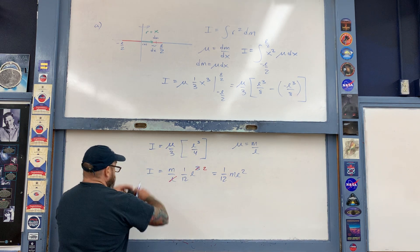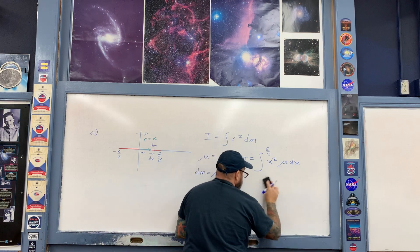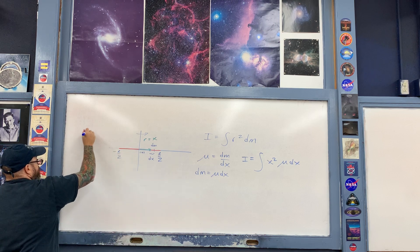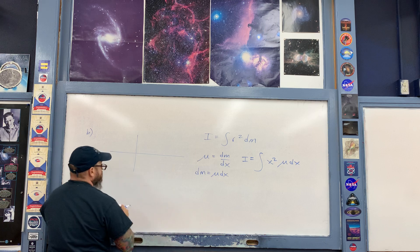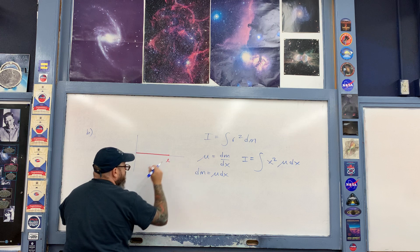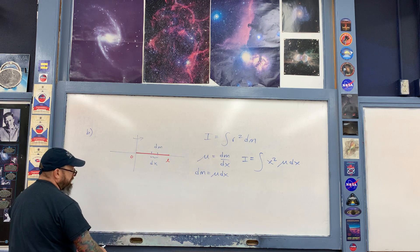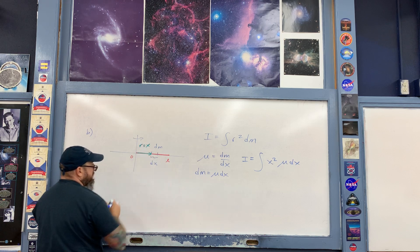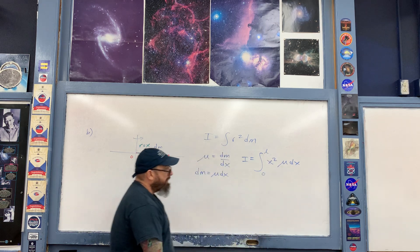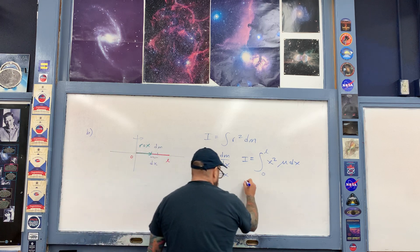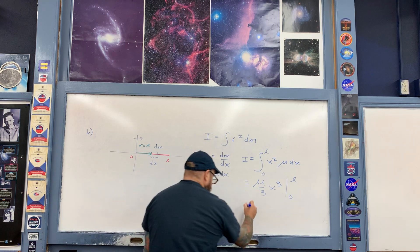Here's how we set up part B. I'm going to position the stick with the axis passing through one end. Therefore, we're going to integrate from 0 to l. We again take a little dm with length dx associated with it. The moment arm r goes from the axis to dm, and its magnitude is once again x. The setup of the integral is exactly the same as before, but now we integrate from 0 to l. The antiderivative is again (1/3)x cubed, so mu/3 times x cubed evaluated between 0 and l — plugging in l and then 0.